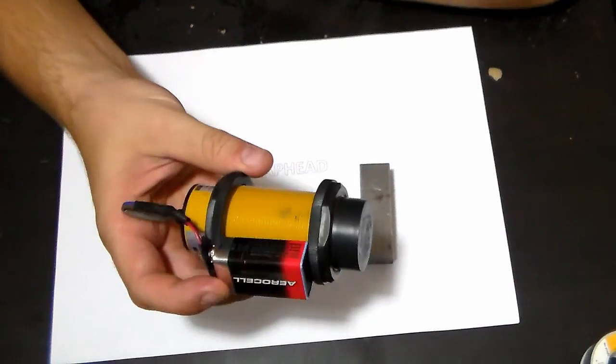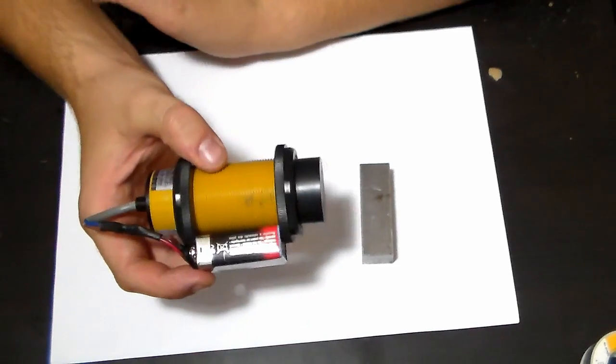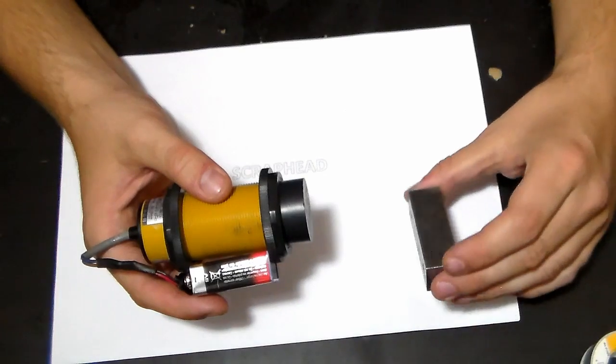At a glance the sensor works like this. An oscillatory circuit causes an electromagnetic field at the head of the sensor.